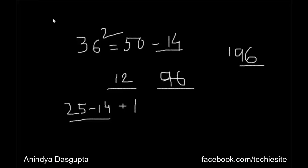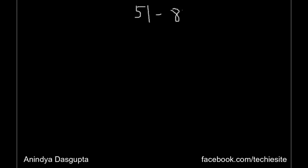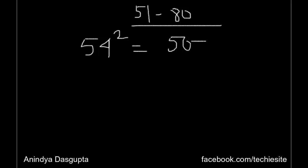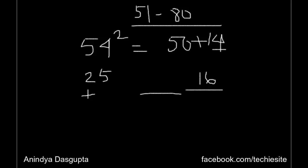Now let's move to the second group: numbers ranging between 51 to 80. For these numbers, the same logic applies. For example, 54 squared: 54 is nothing but 50 plus 4. The last two digits will be 4 squared, which is 16. The first two digits are obtained by adding this number to 25: 25 plus 4 equals 29. So 54 squared is 2916.